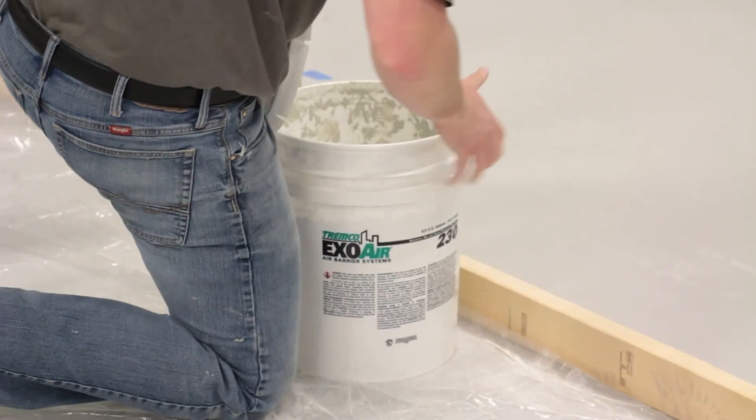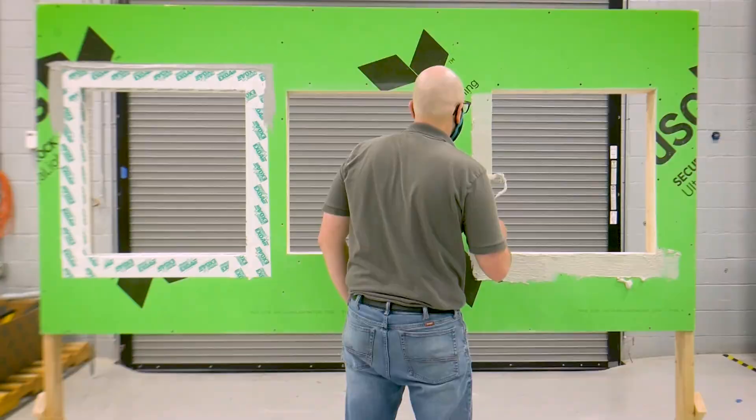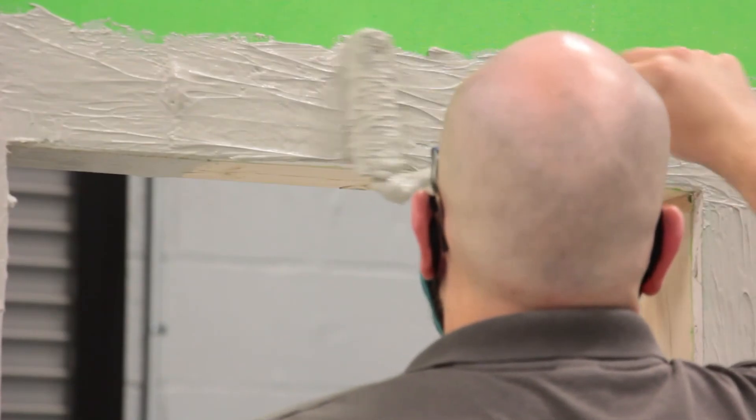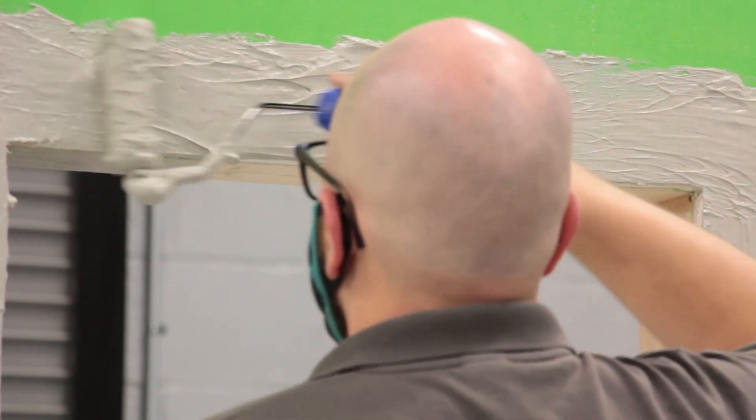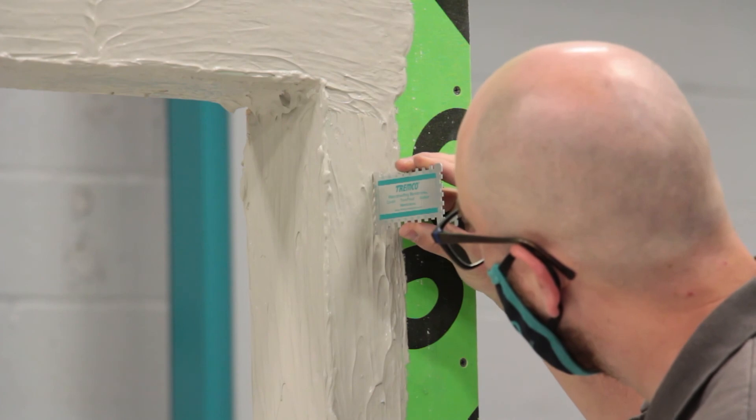First, use a roller or trowel to apply the ExoAir 230 at 35 wet mills into the rough opening and onto the outside face of the substrate, extending at least 3 inches. Use a wet mill gauge to ensure proper and consistent application thickness.